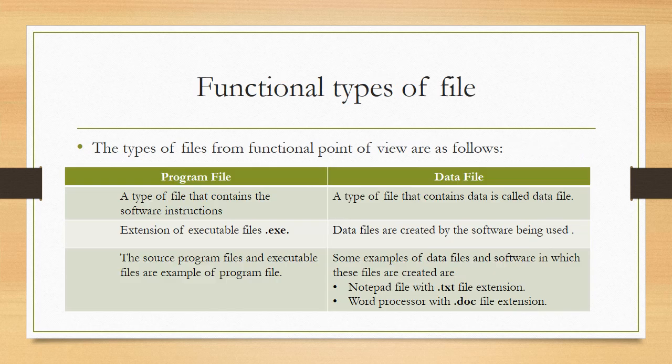Next, the functional types of files. If you are looking from the functional point of view, the types of files are two: program files and data files. A program file is the type of file that contains the software instructions. When you are writing a program, writing a code, writing a set of instructions — these are all stored in a program file.